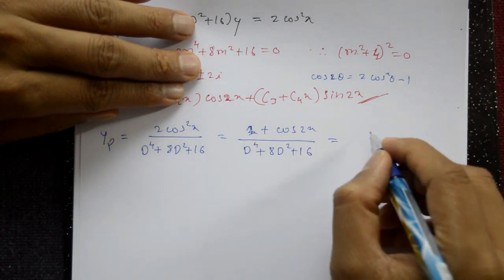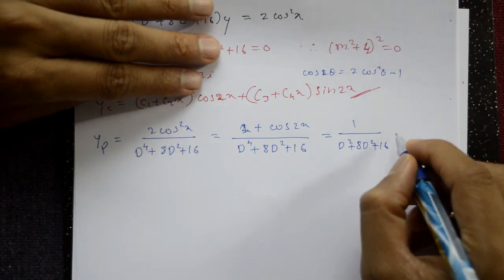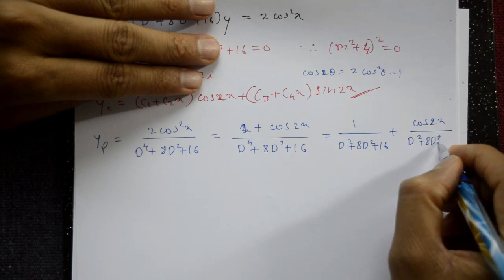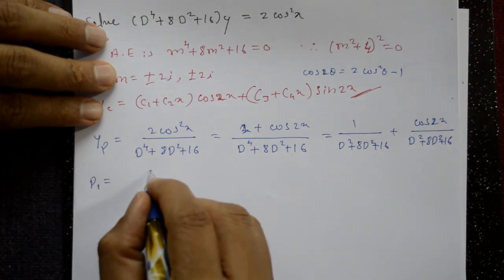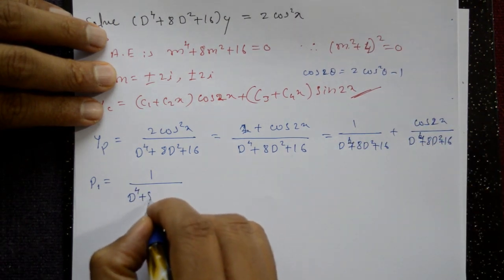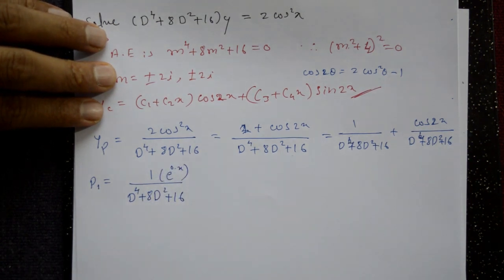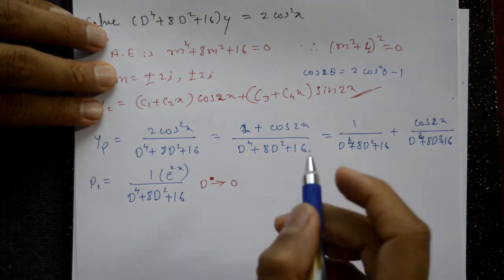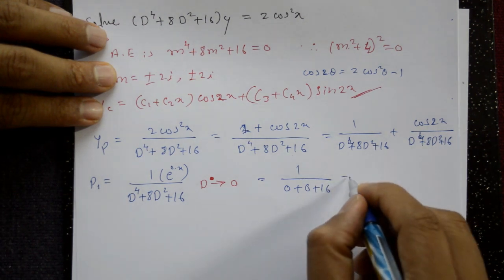For P1: treat 1 as e^(0·x), so D = a = 0. P1 = 1/(0 + 0 + 16) = 1/16. For P2 (Type 2): D² = -4, so D⁴ = (-4)² = 16. P2 = cos2x / (16 + 8(-4) + 16) = cos2x / (16 - 32 + 16) = cos2x / 0. Denominator equals zero.